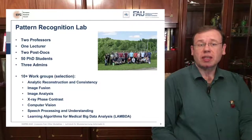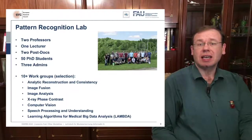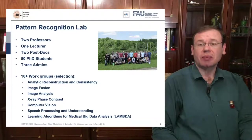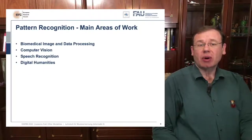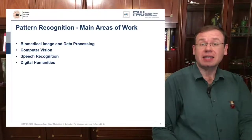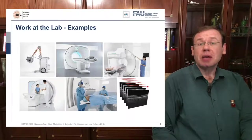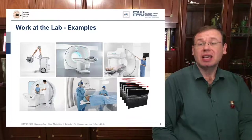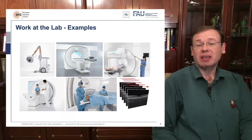We have two professors, one lecturer, two postdocs, quite a few PhD students, and we have more than 10 work groups running right now. The main areas of our work are biomedical image and data processing, computer vision, speech recognition, and lately also digital humanities. Being located in Erlangen, you can imagine that we work with quite a few imaging modalities.